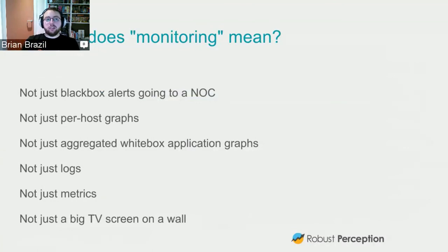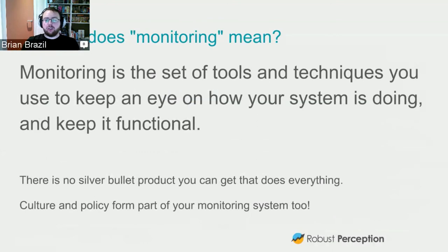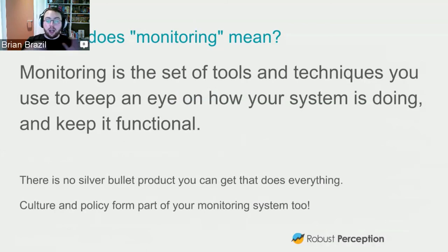So going back to what monitoring means — it's not just black-box alerts going to a NOC, not just per-host graphs or aggregated white-box graphs like you get from Prometheus, not just logs, not just metrics, and not just a big TV screen on the wall, which is unfortunately where a lot of monitoring seems to end. The way I'd see it: monitoring is the tools and techniques you use to keep an eye on your system, see what it's doing, and keep it functional. There is no silver bullet that will solve your monitoring problems — you need metrics, logs, profiling, and distributed tracing. And keep in mind: culture, policy, and people are also part of your monitoring system. You need to think about how you organize on-call shifts so people still get holidays and can see their families.